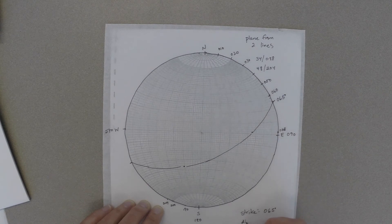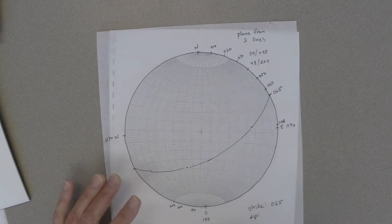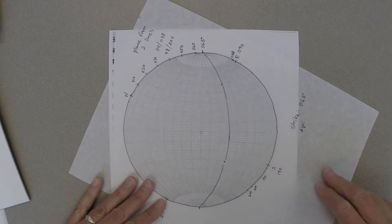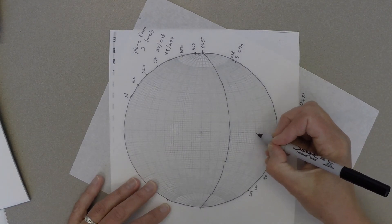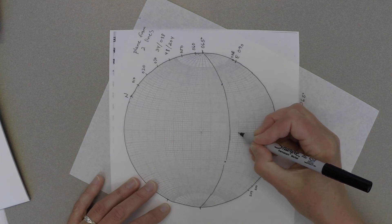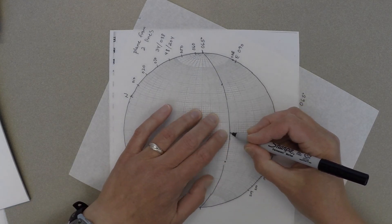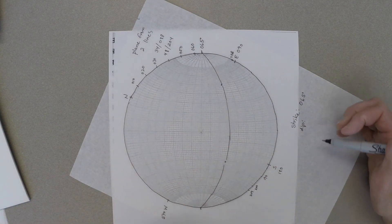Then to find the dip of the plane, we'll spin the tracing paper so that the strike on the tracing paper lines up with north on the stereonet template, then count in from the outside to find the dip angle. In this case, the dip angle is 60 degrees.